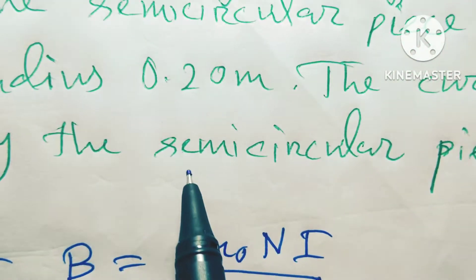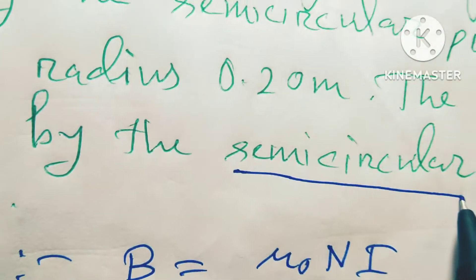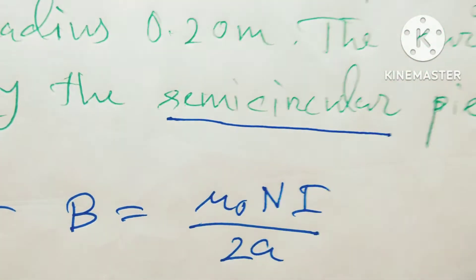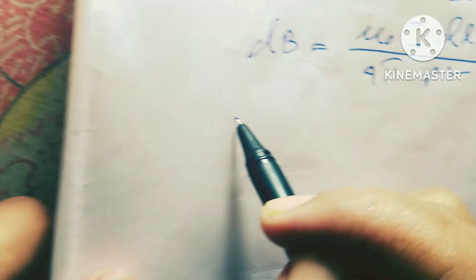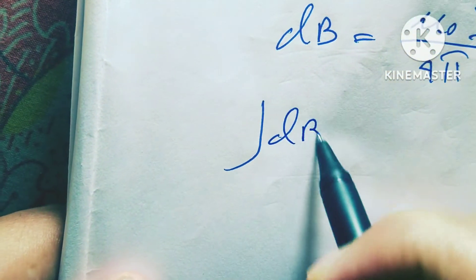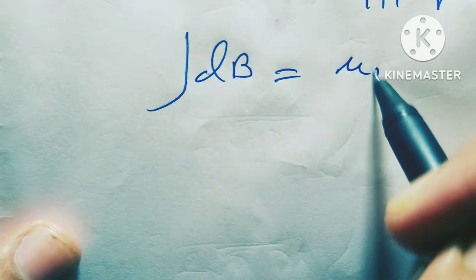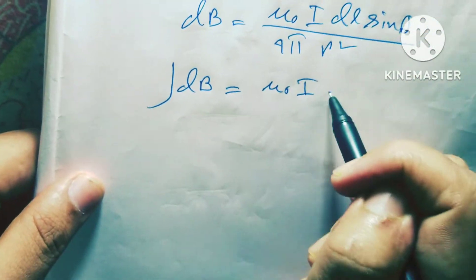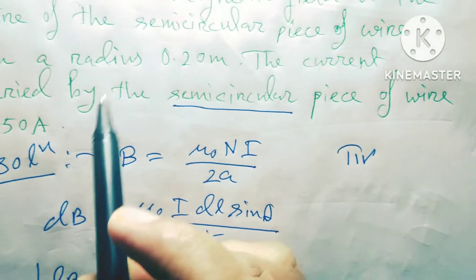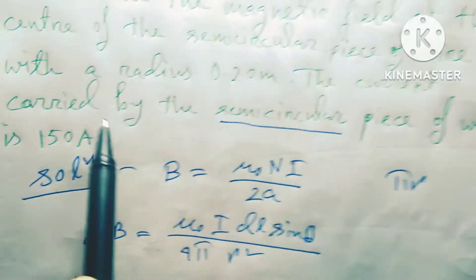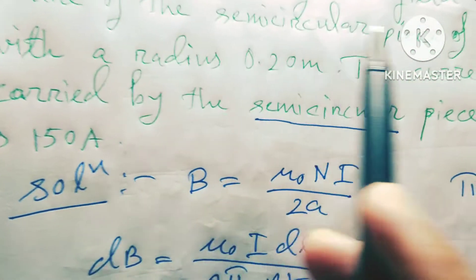The question is semicircular. Must remember, semicircular means πr. So, integrating dB equals to μ₀ i sin theta. Theta is in here, semicircular magnetic field.